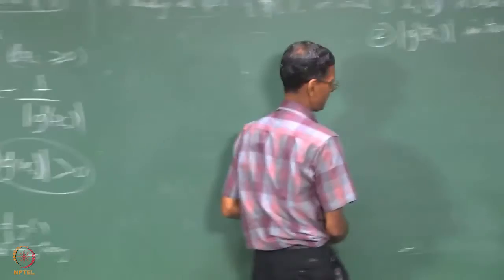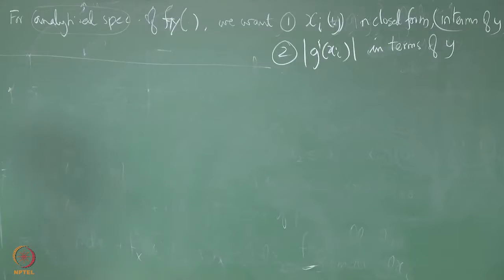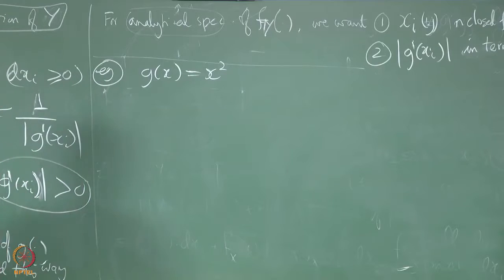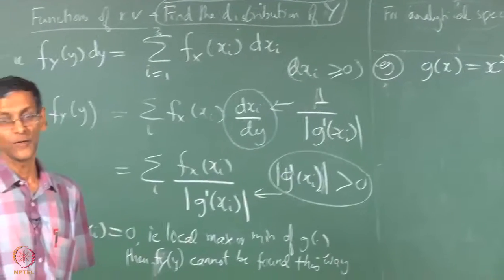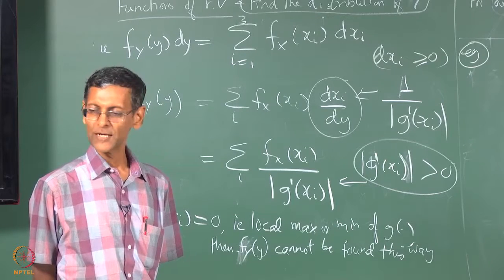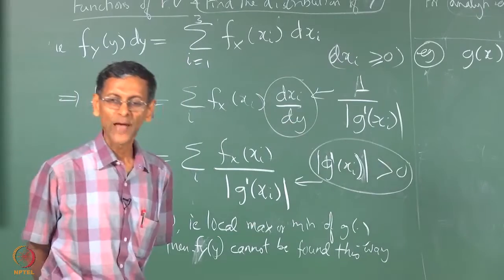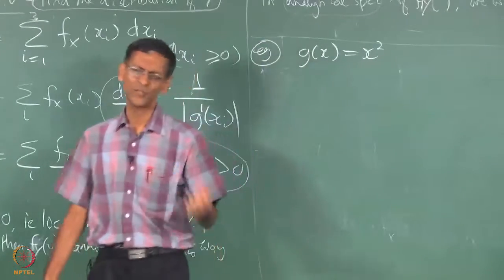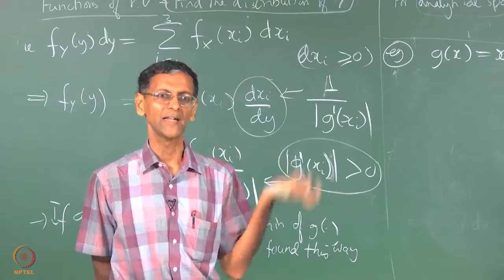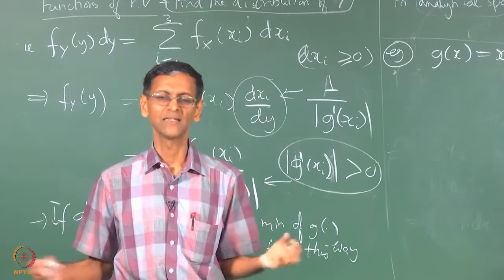So let us look at some examples which will abundantly make this very clear. The most popular example is y equals x square or g(x) equals x square. Squaring is one of the age old signal processing functions that we do, starting with square law detectors which used to be taught in some communications class.